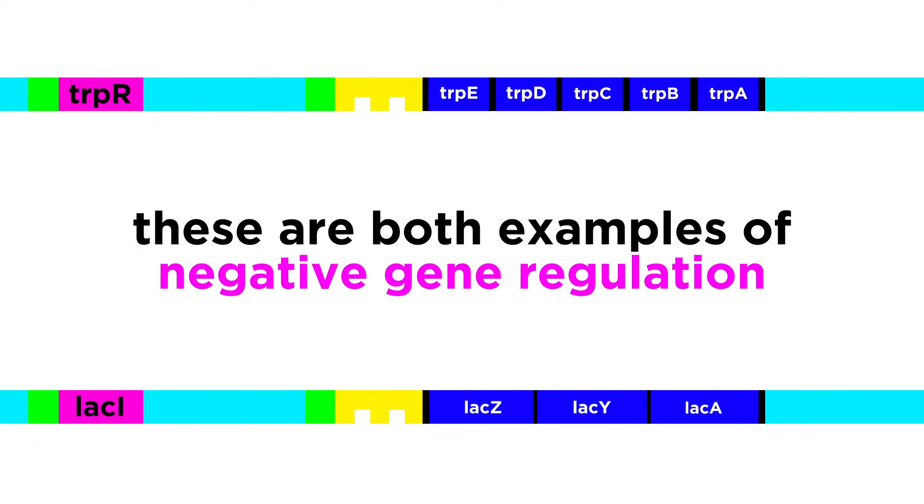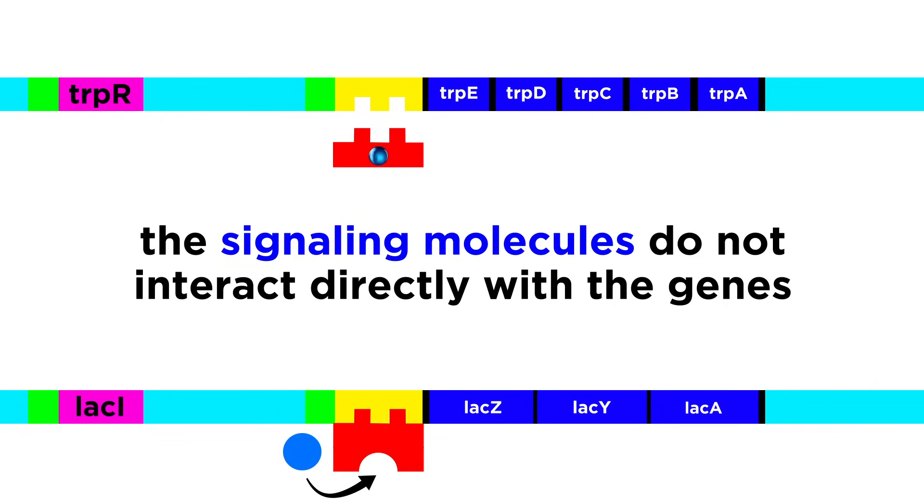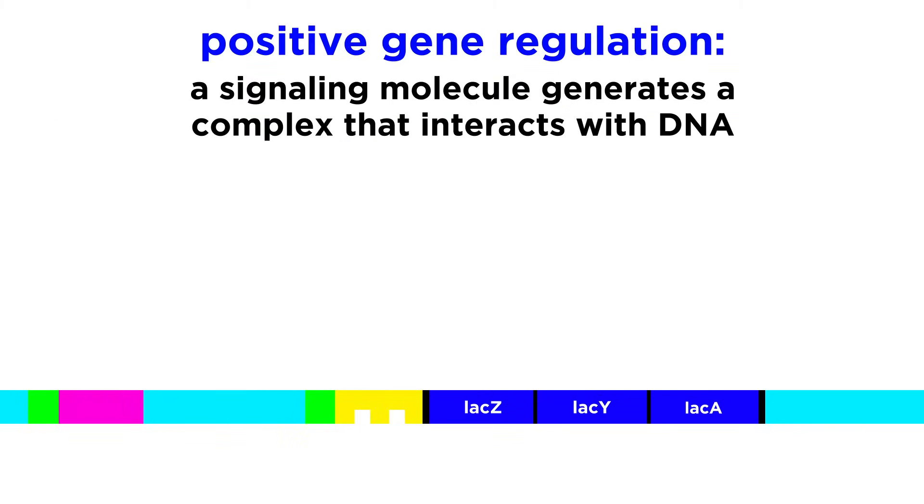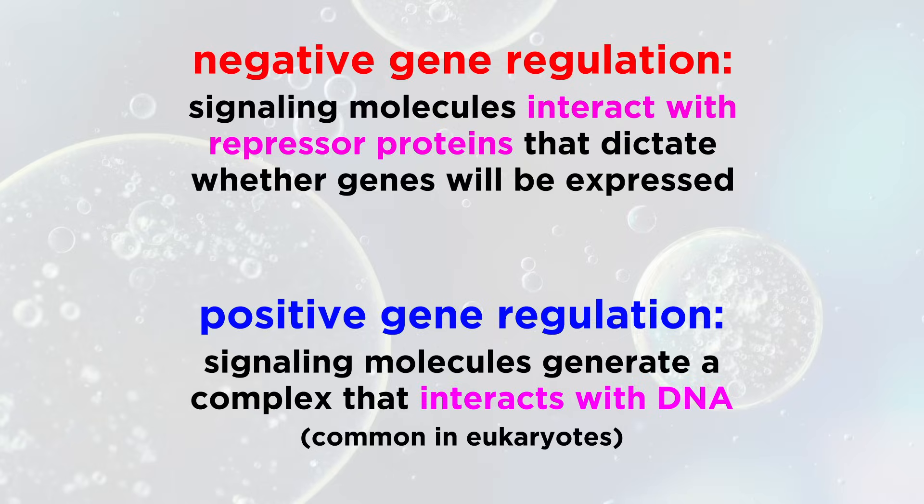These two examples both demonstrate negative gene regulation. One repressed gene expression, and the other deactivated a repressor, so the signaling molecules do not interact directly with DNA. There can also be positive gene regulation, where a signaling molecule like cAMP will bind to a protein called an activator, which will then bind to DNA and directly stimulate gene expression by increasing the affinity that RNA polymerase has for the promoter. So negative and positive gene regulation are both methods by which signaling molecules interact with operators, repressors, and promoters to regulate the frequency with which certain genes are expressed.